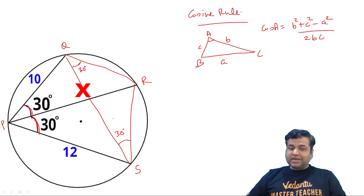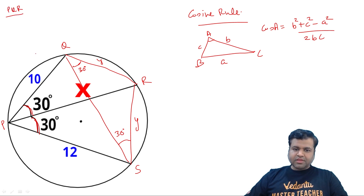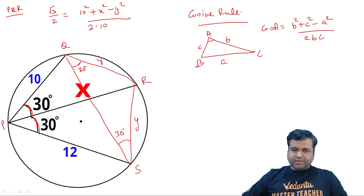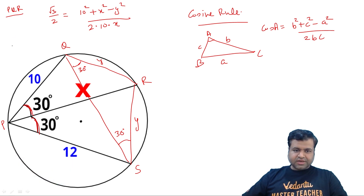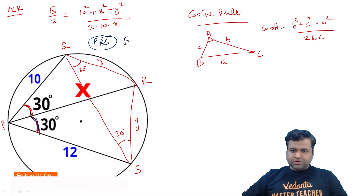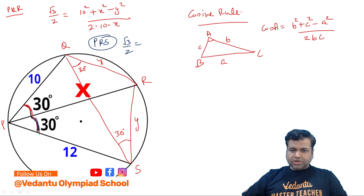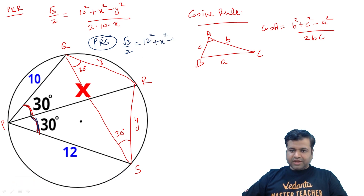Triangle QRS is clearly an isosceles triangle. Let's say QS equals RS, call it y. Now in triangle PQR, applying the cosine rule for angle 30 degrees: cos 30, which is root 3 by 2, equals 10 squared plus x squared minus y squared, divided by 2 times 10 times x. Similarly, in triangle PRS, applying cos 30: root 3 by 2 equals 12 squared plus x squared minus y squared, divided by 2 times 12 times x.